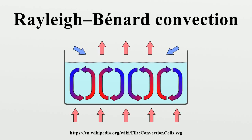The experimental setup uses a layer of liquid, e.g. water, between two parallel planes. The height of the layer is small compared to the horizontal dimension. At first, the temperature of the bottom plane is the same as the top plane. The liquid will then tend towards an equilibrium where its temperature is the same as its surroundings.